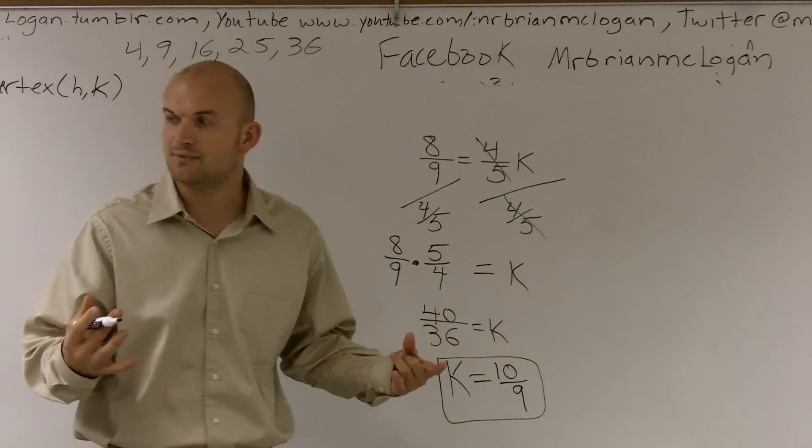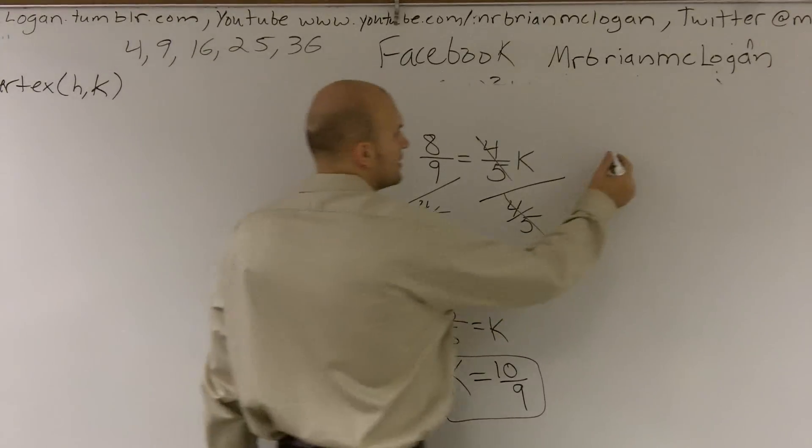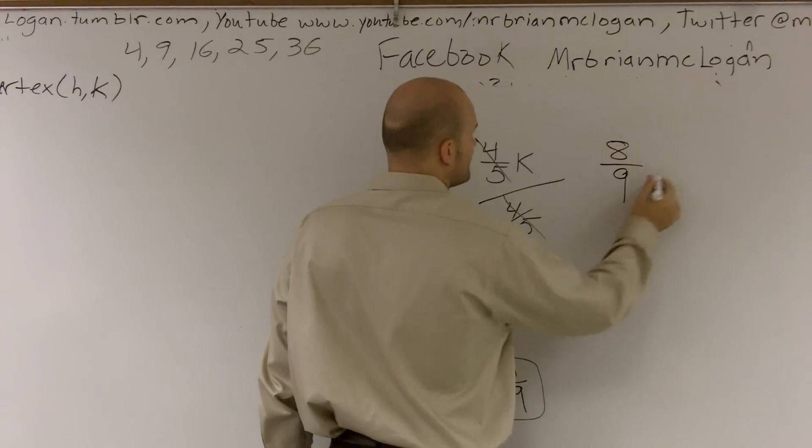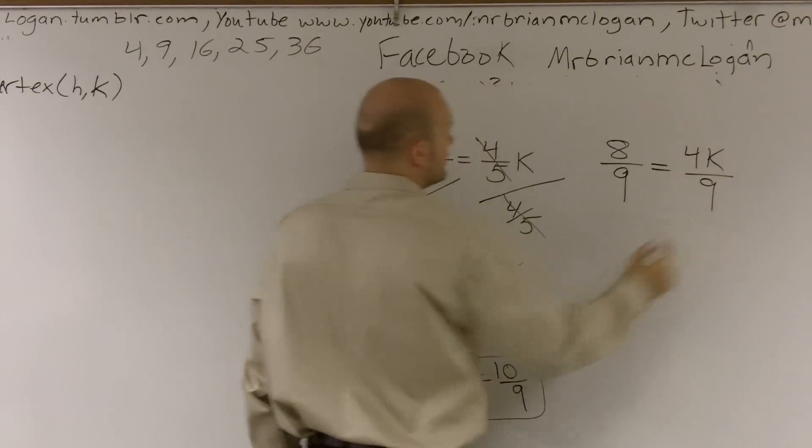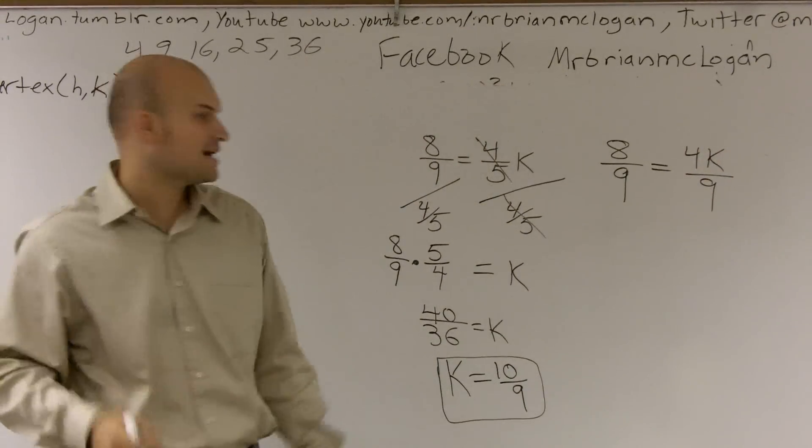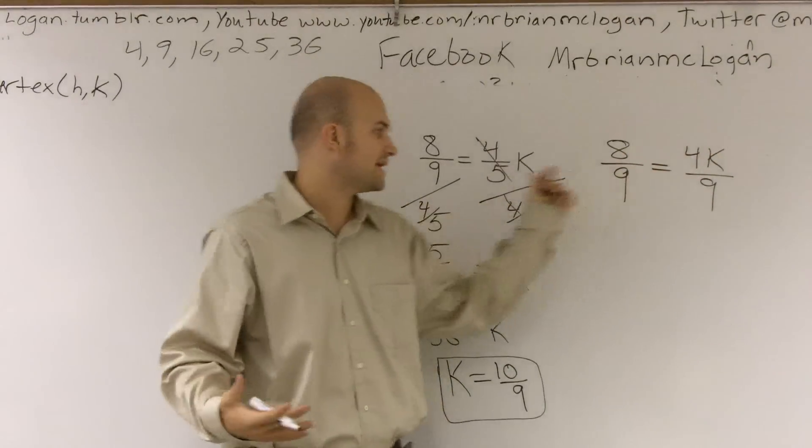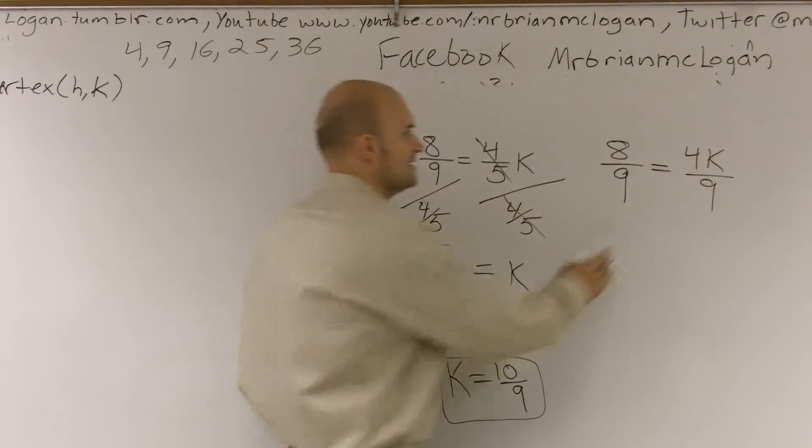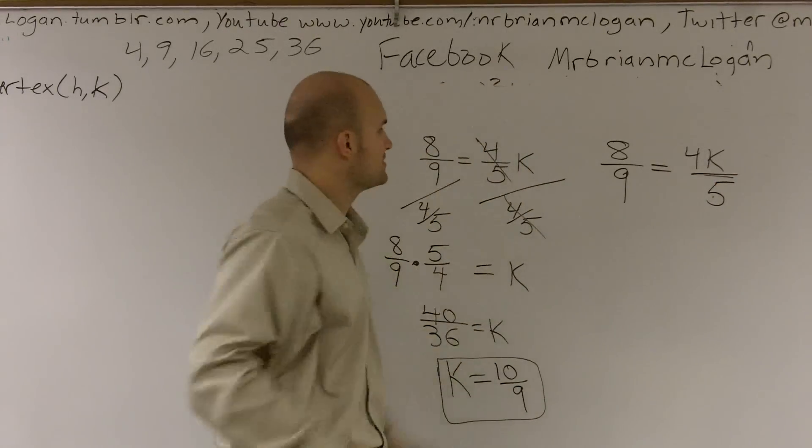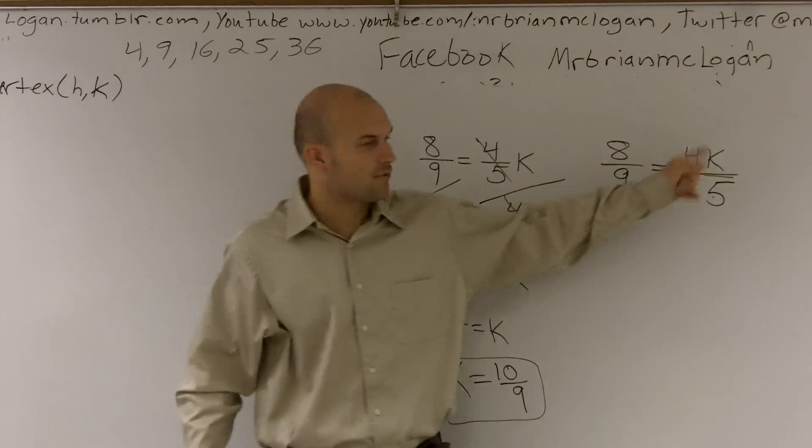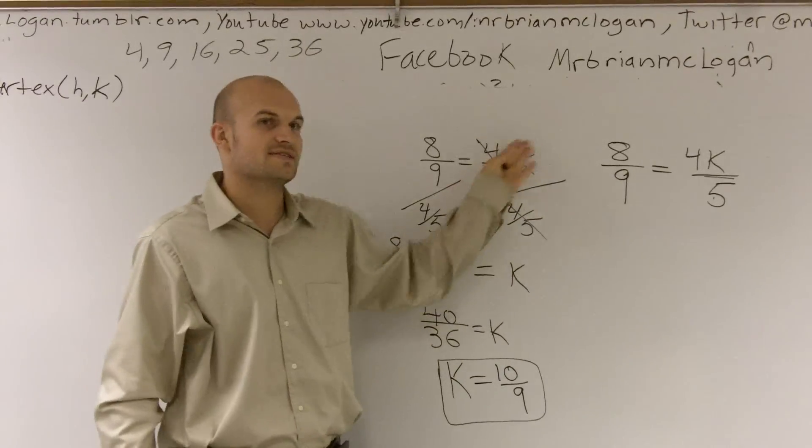Now, let me go and show you one more way. If this doesn't really make sense to you, let me try one more way that might help. Another way you can rewrite the problem is we can actually make k a part of the fraction. You can say eight-ninths equals four k divided by five. That's the same thing as four-fifths times k.